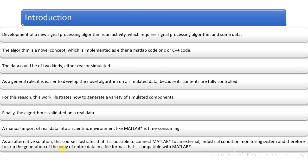As an alternative solution, this course illustrates that it is possible to connect MATLAB to an external industrial condition monitoring system, skipping the generation of a copy of the entire data in a file format compatible with MATLAB. For automation, we are designing a condition monitoring system (CMS) integrated with artificial intelligence, making it a smart condition monitoring system. These algorithms automatically record signals, perform analysis, and restore signals in a systematic manner.